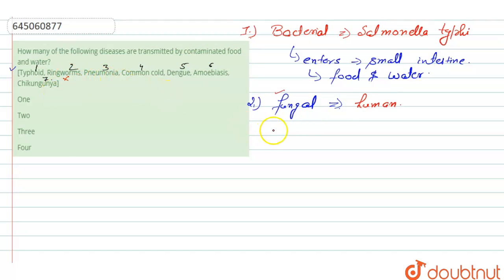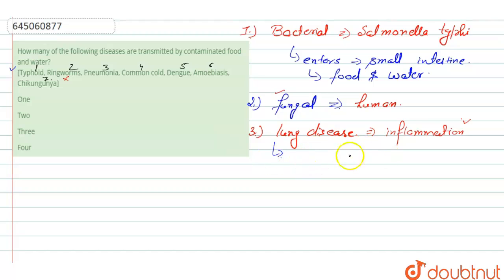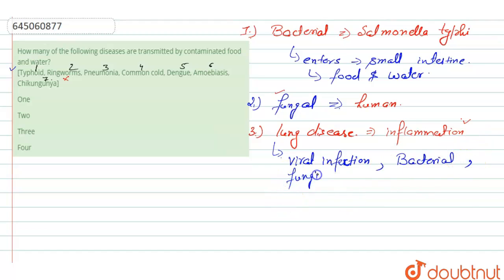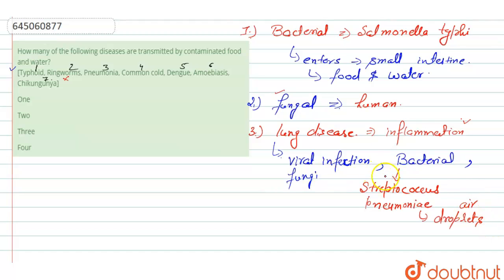Next is pneumonia. Pneumonia is a lung disease where inflammation takes place in the air spaces of the lungs. It is the most common infection of the lungs and can spread through viral infection, bacterial infection, as well as fungal infection. The bacteria responsible is Streptococcus pneumoniae, which spreads through air droplets — not by contamination of food and water. So this one is also incorrect.